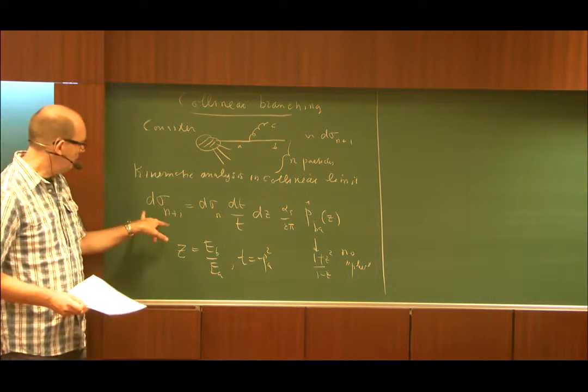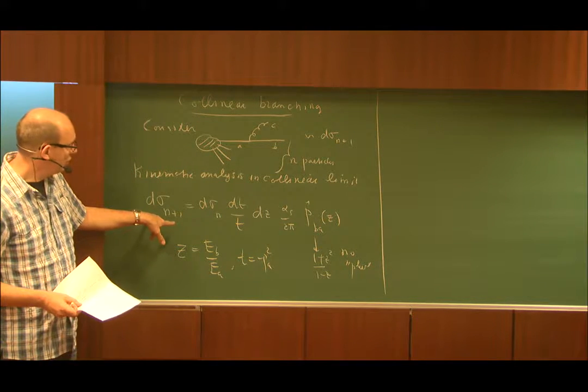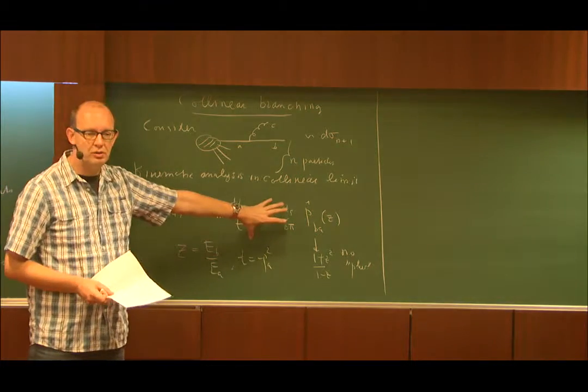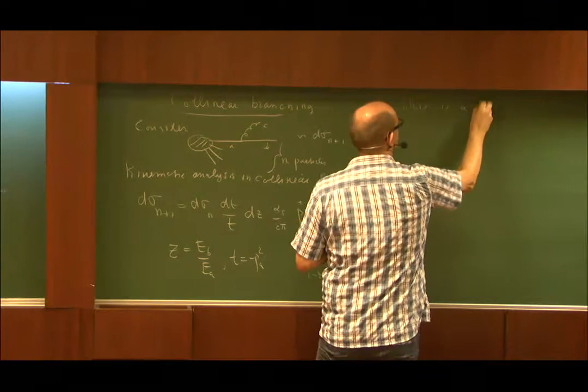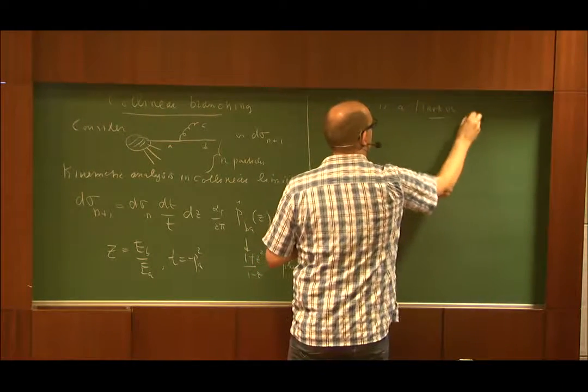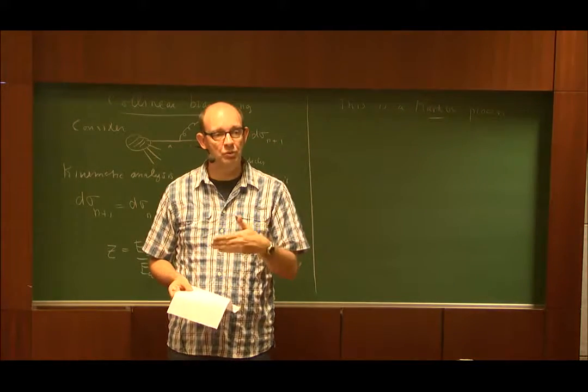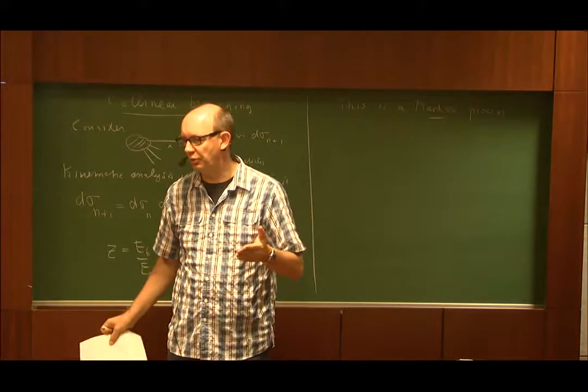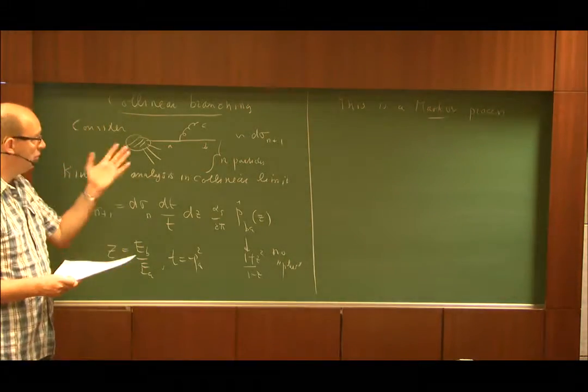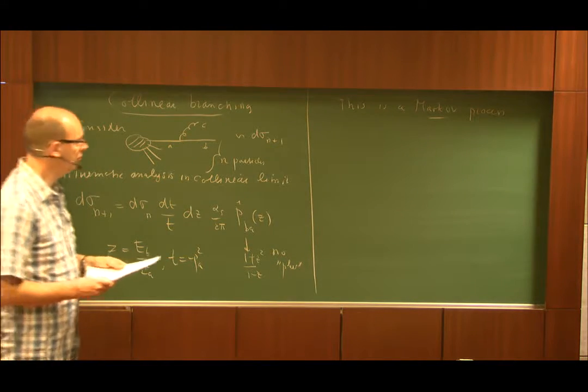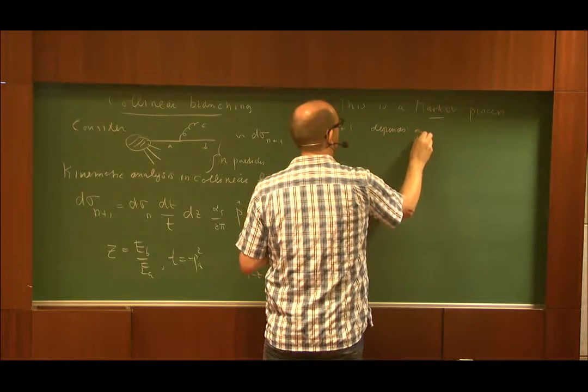Now you notice the structure here, the cross-section, which is a probability of itself. For n plus 1 partons depends on that for n partons times a factor. And this is typical for a Markov process. The defining characteristic is that you have a system that evolves, and every evolution step only depends on the previous one. It doesn't depend on the previous previous, or on all the ones before the whole history. Markov is just step after step after step. And this is a name that you see a lot in parton showers. So n plus 1 depends only on n. Depends only on previous step.